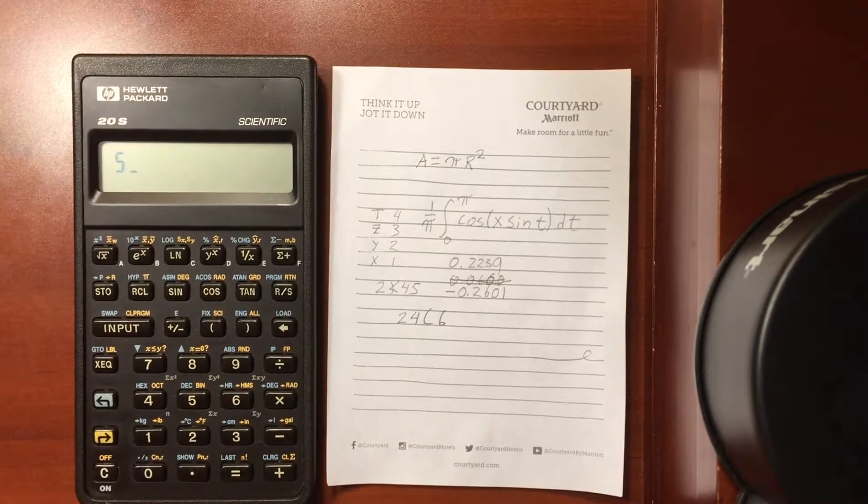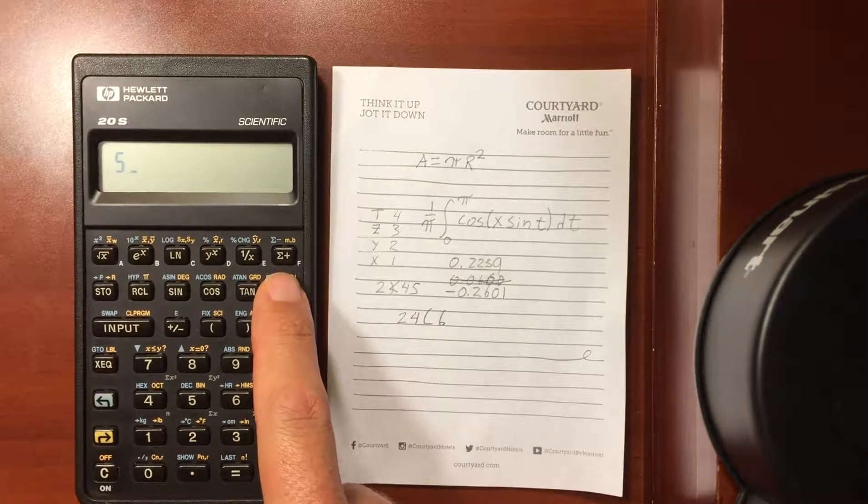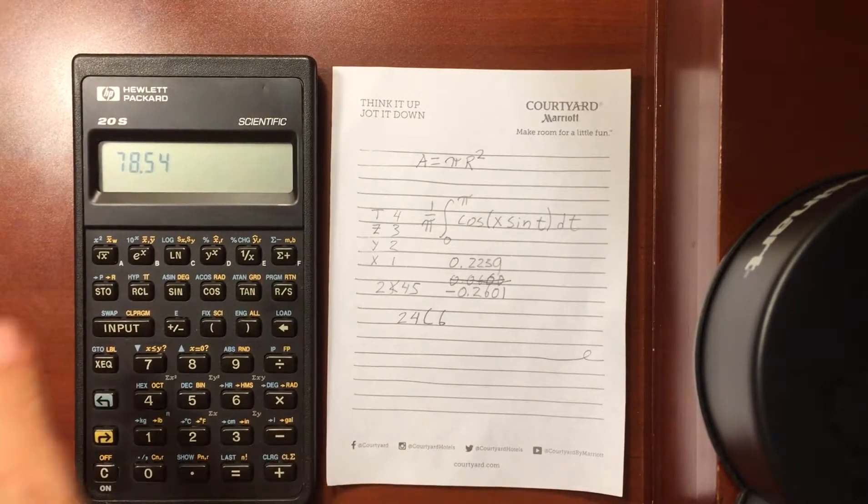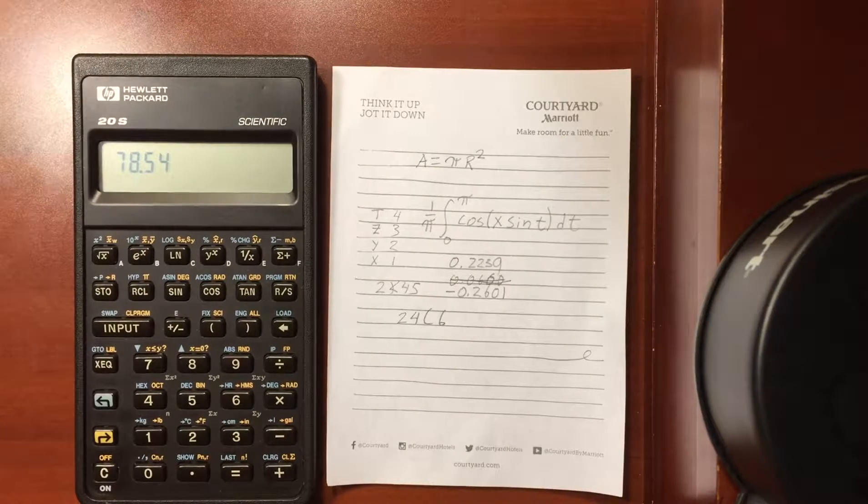And then I can enter in something into the register. And if I hit run stop, it will run through that program space. And that gives me my answer. The area of a circle of radius 5 is 78.54.